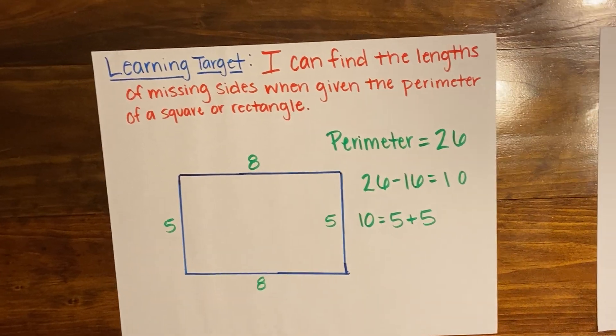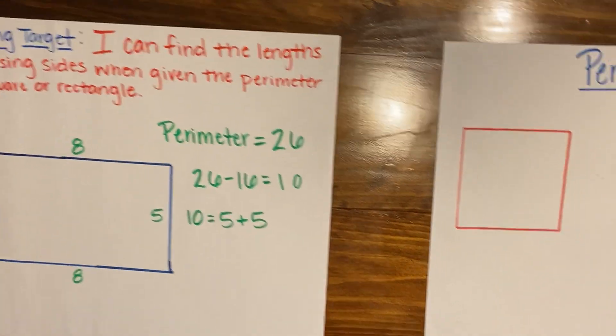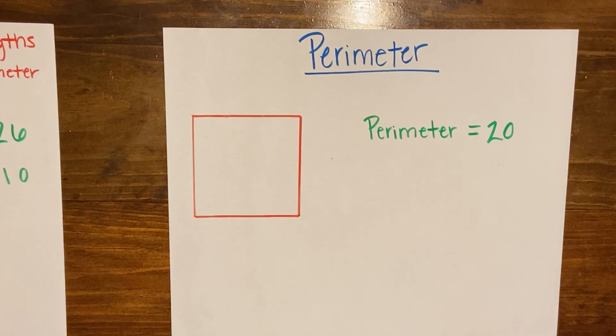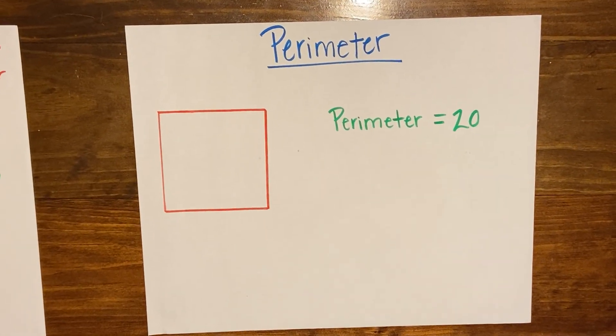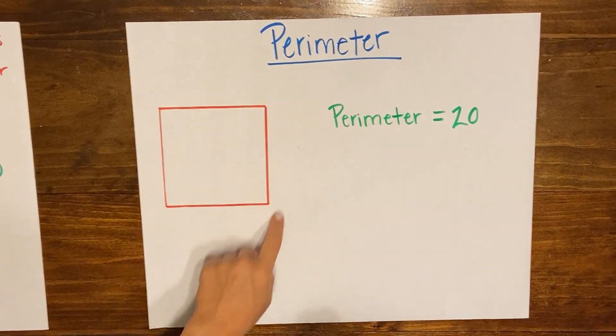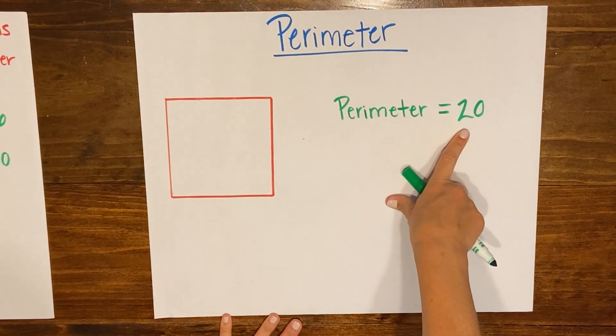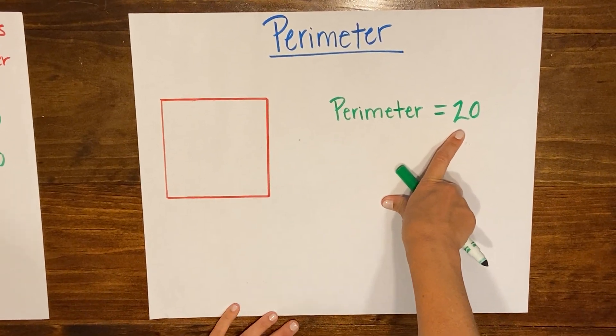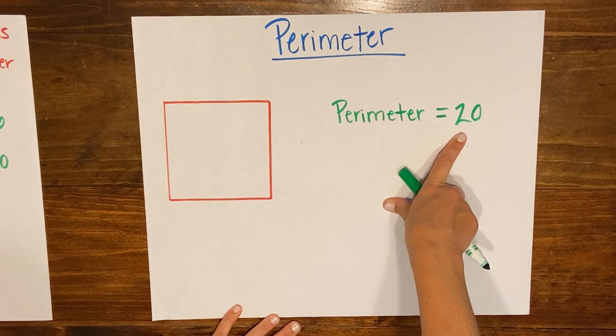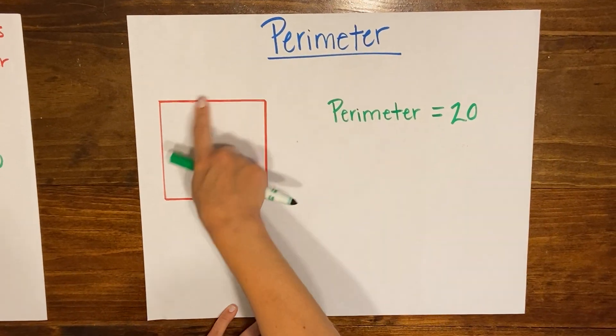Okay so let's look at what we do when the shape that we're given is a square. Now in this problem we didn't get any sides. They didn't give us any of the sides to this square but they did give us the perimeter of 20. So if I think back to what I know about a square I know that all of the sides of my square are equal.